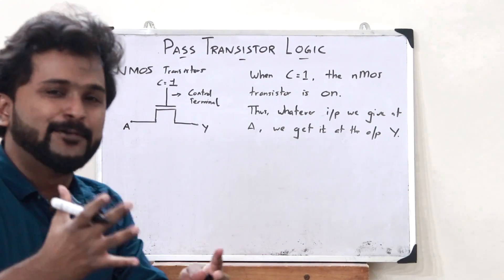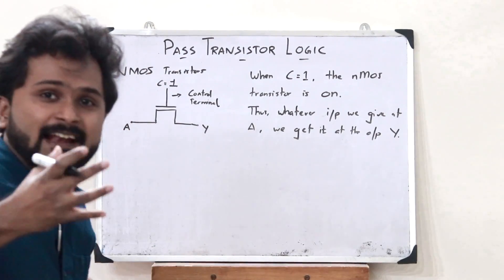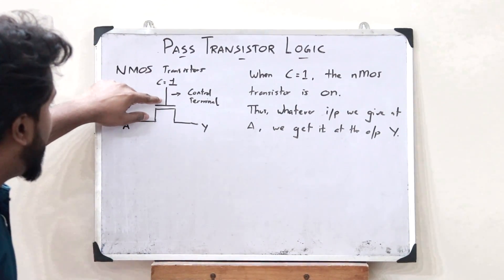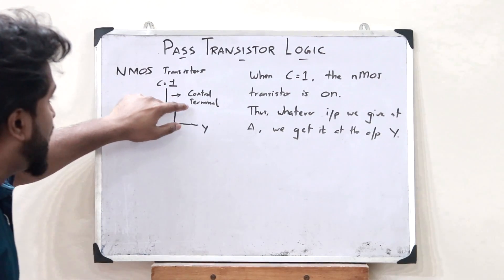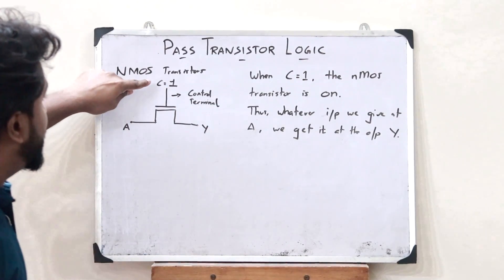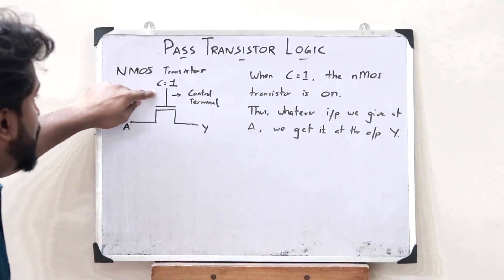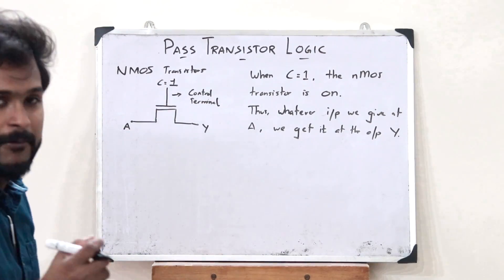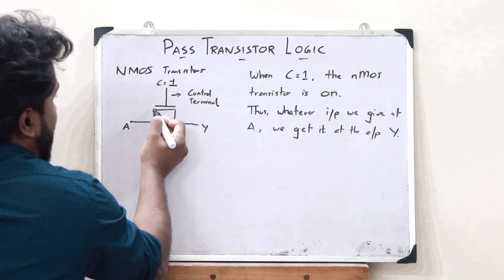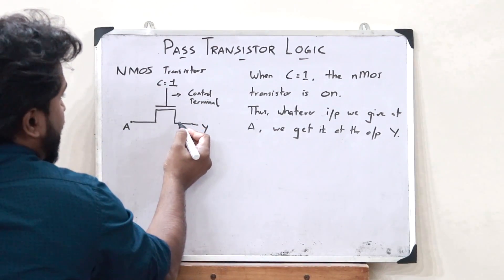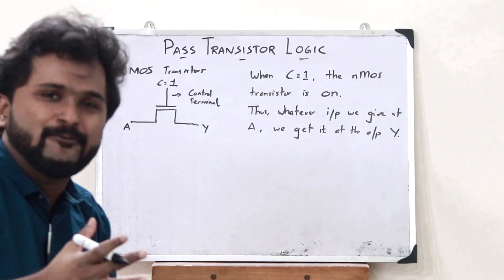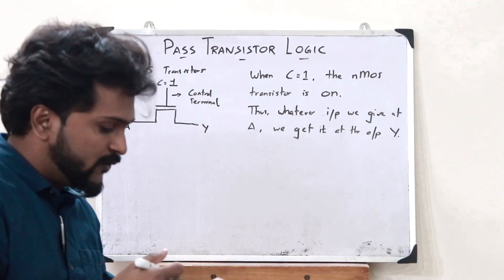When C is equal to 1, that is, when the input given to the control terminal is 1, the NMOS transistor is on. Thus, whatever input we give at A, we get that same input at the output terminal Y. This simple logic is what you refer to as pass transistor logic — when we take an NMOS transistor and use the gate terminal as the control terminal, if 1 is given to the control terminal, whatever input we give will appear at the output.